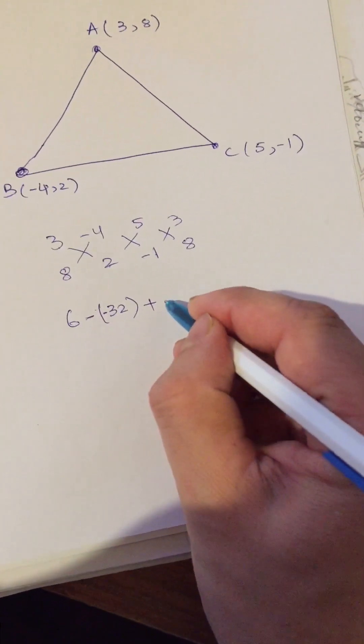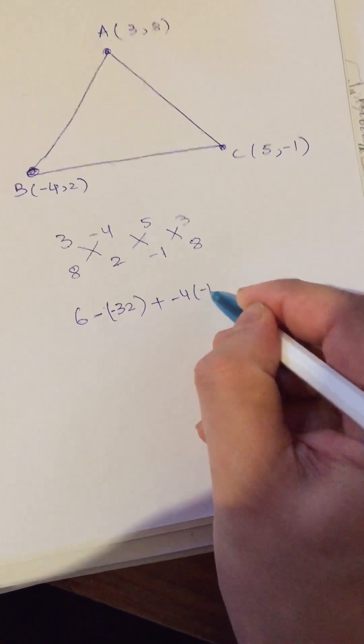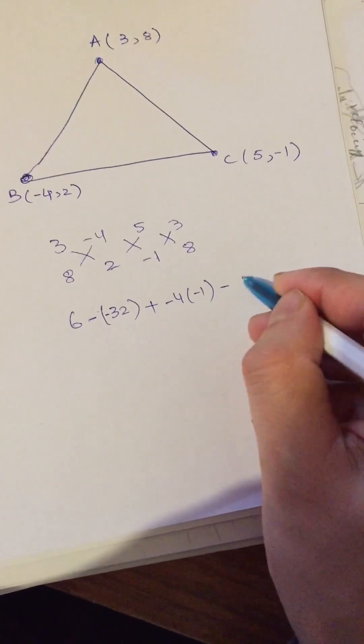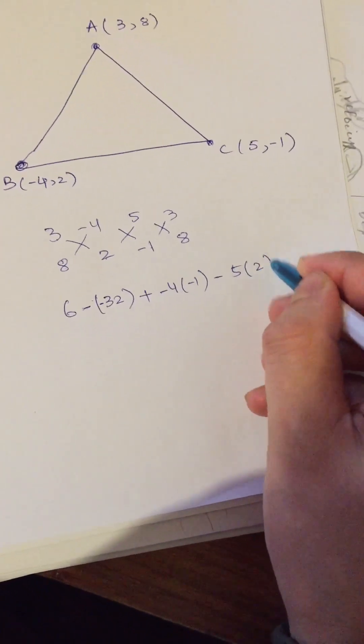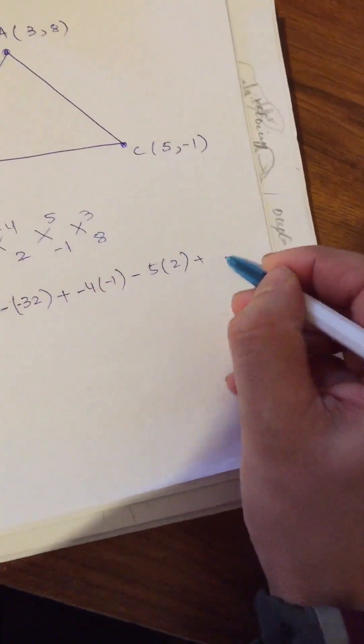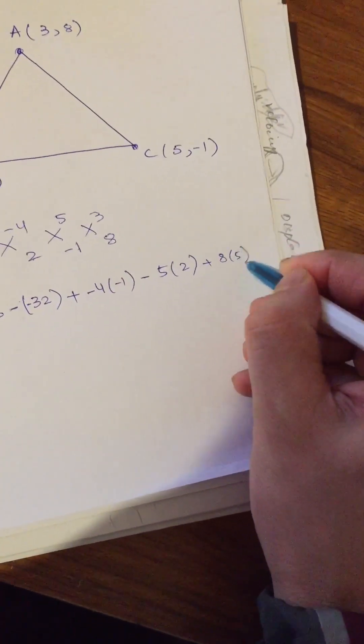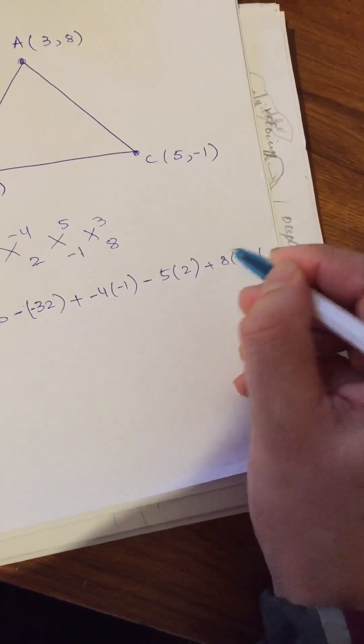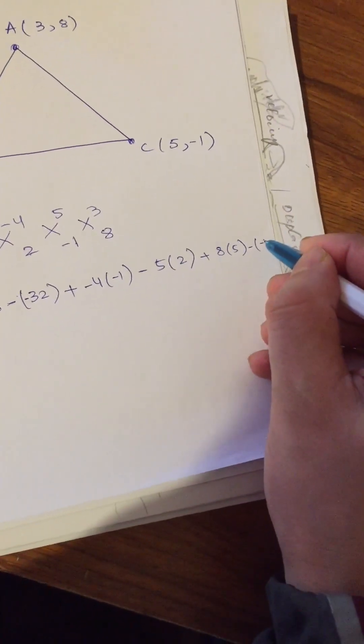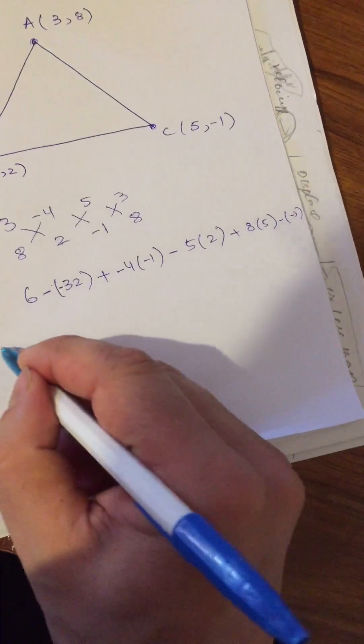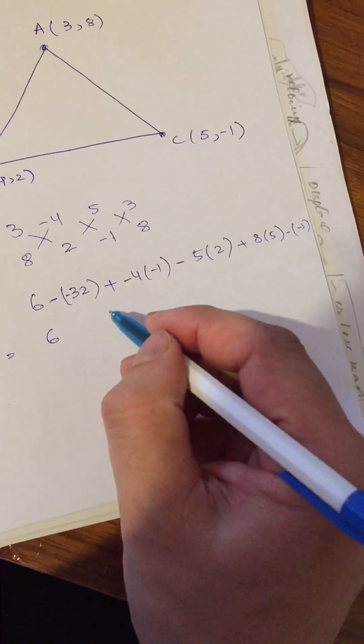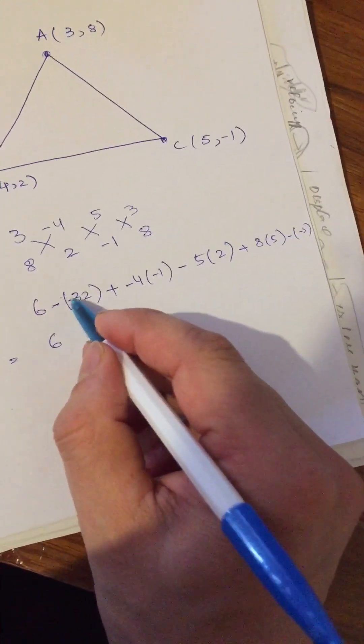Next, now you are going to get minus 4 into minus 1, minus 5 into 2, and lastly this is 8 into 5 minus 3 into minus 1. It is minus 3, it is 6, then we have minus 1.